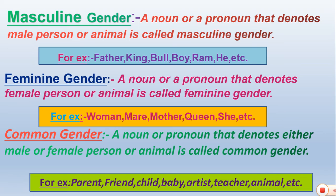For example, if it is a 'parent', it could refer to either a male or female — it could be a mother, a father, or someone else. Since you don't know if it is male or female, we call it common gender.